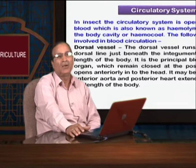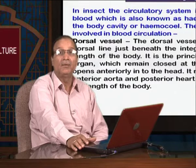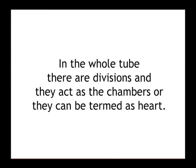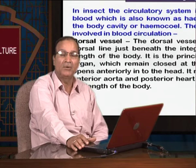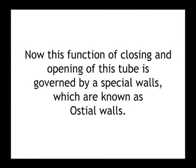The dorsal vessel is opened anteriorly but closed posteriorly. Within the whole tube, there are divisions that act as chambers and can be termed as hearts. In the case of insects, this tube is divided into 13 chambers — so we can say there are 13 hearts present. The opening and closing of this tube is governed by special valves known as osteal valves.